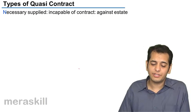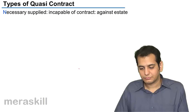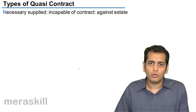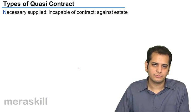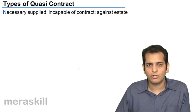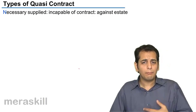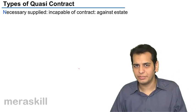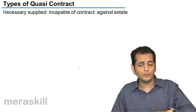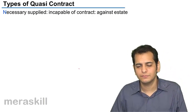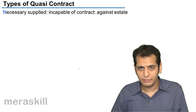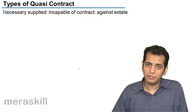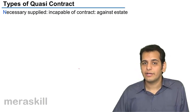The first quasi-contract is 'Necessaries Supplied.' Taking you back to the topic of capacity to contract — capacity to contract states that a person who is incapable of contracting makes any contract with him void ab initio, like a minor. However, if you supply necessaries to such a person, the estate of such a person is liable to you. You can recover money from his estate.